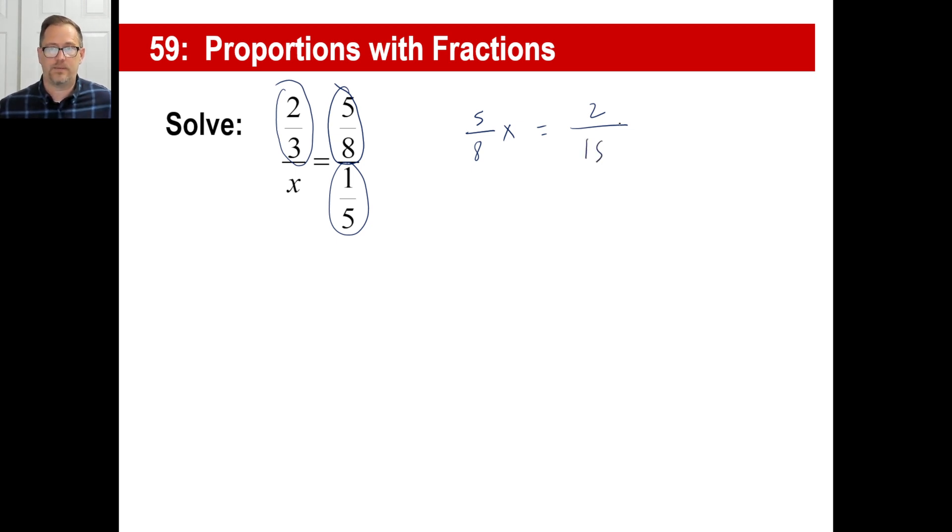Only one thing left to do, right? You multiply by the reciprocal. 8 fifths. You know that. 8 fifths. And that's always, of course, x. And 2 times 8 is, well, wait, can I cancel here? Nope. 2 times 8 is 16. 15 times 5 is 75. There you go. No big deal.